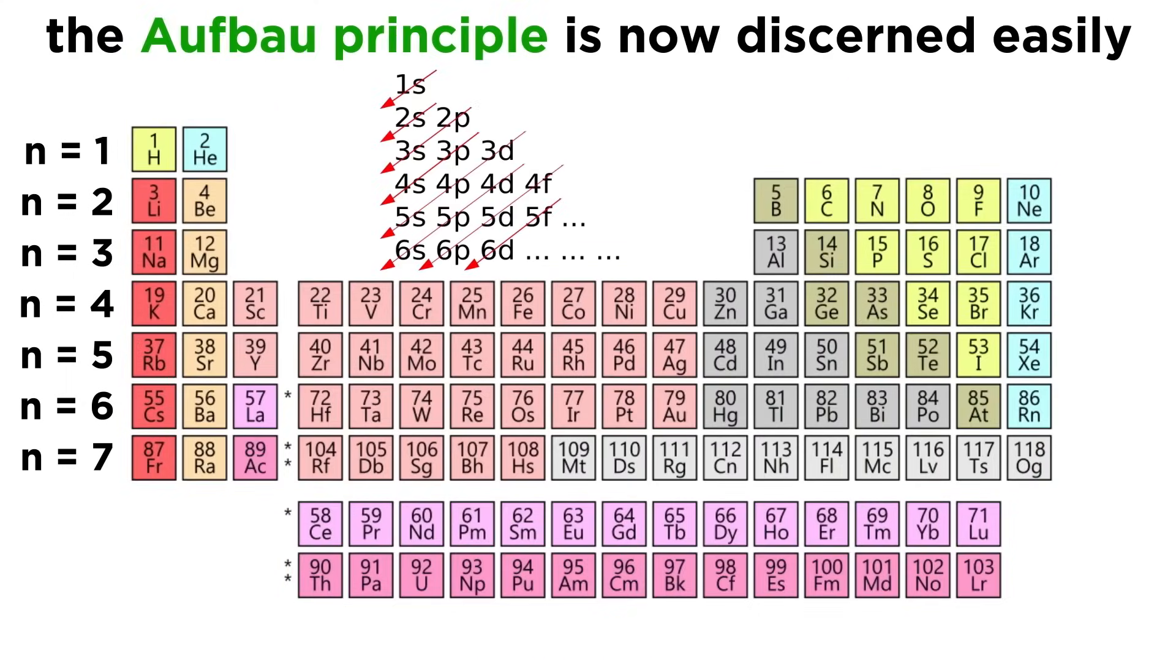If we can internalize this way of looking at the periodic table, then the Aufbau principle reveals itself as we simply read left to right and up to down on the table. Starting at the top left corner, the order would be 1s, 2s, 2p, 3s, 3p, 4s, 3d, 4p, and so forth, which is precisely the order dictated by the Aufbau principle.